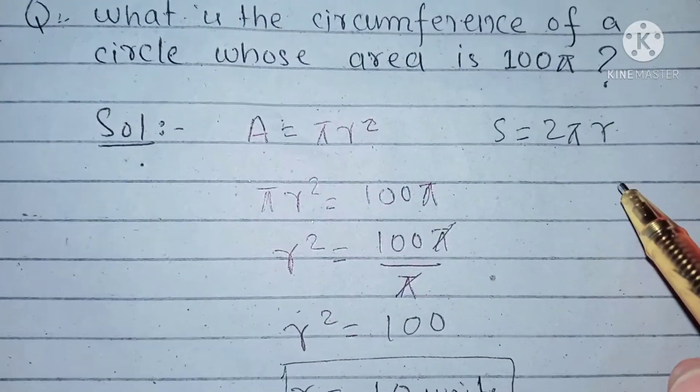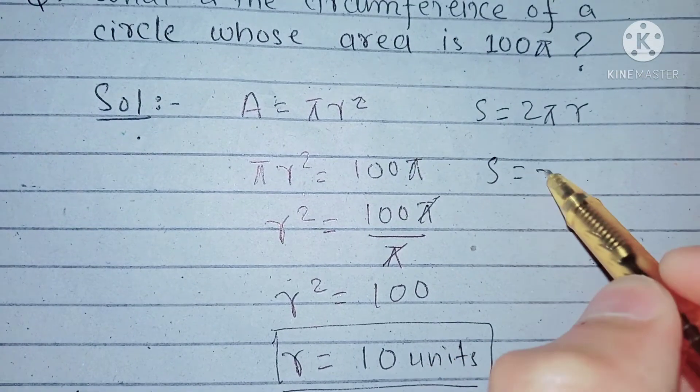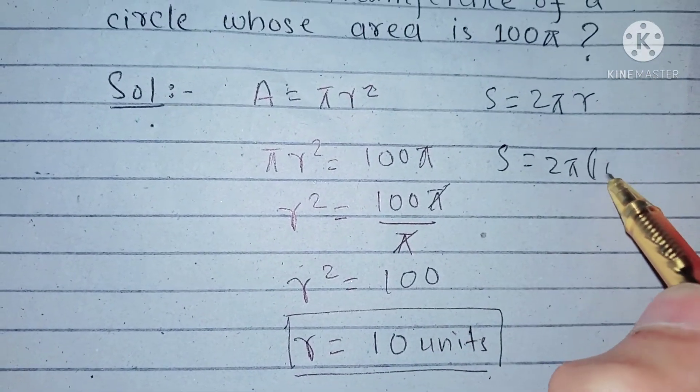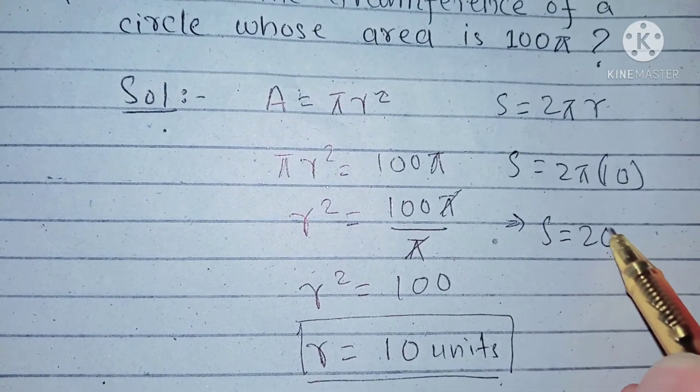And now we can find out the circumference of that circle easily as S equals 2π into r is 10 units. This again implies that S equals 20π. So we have found that circumference.